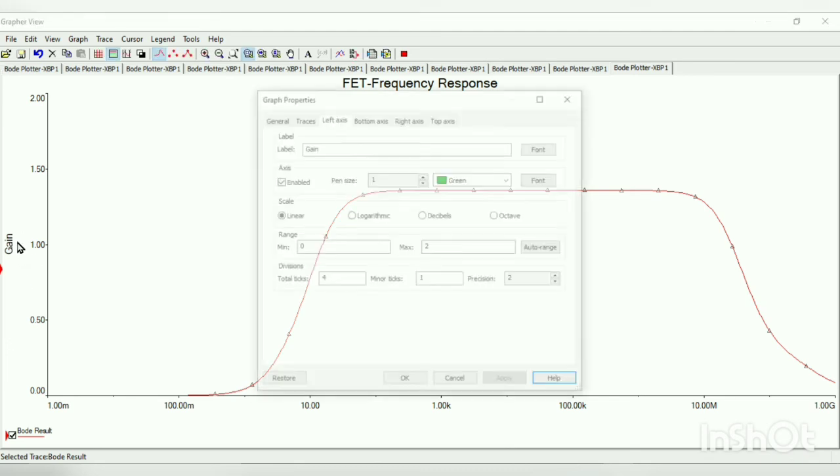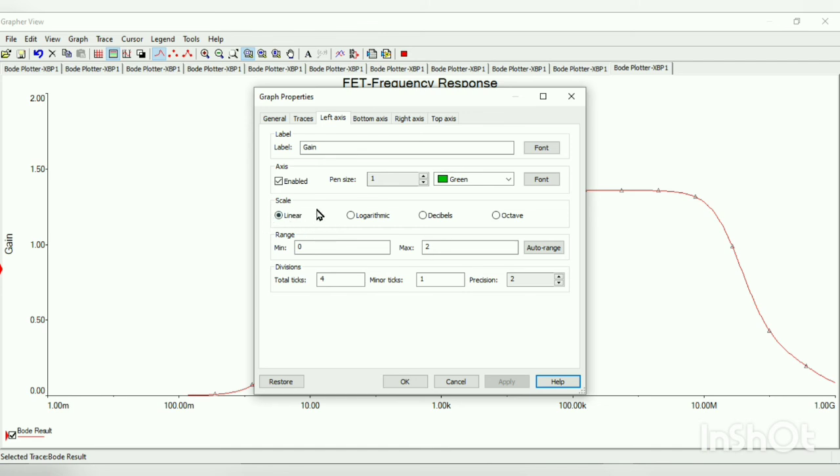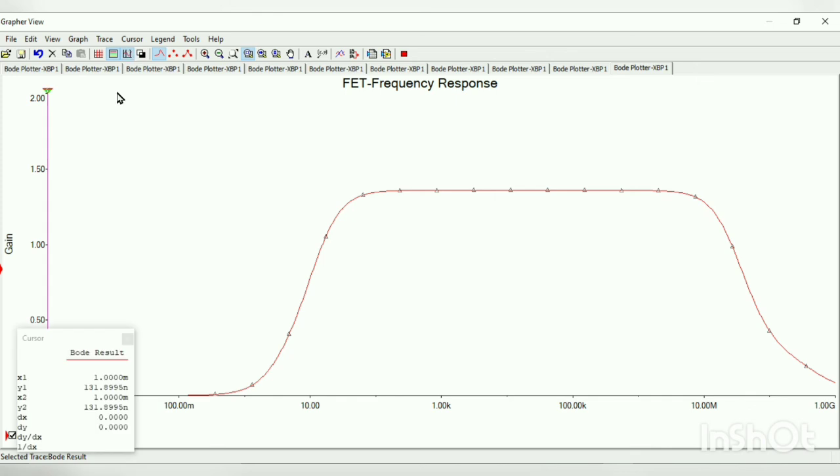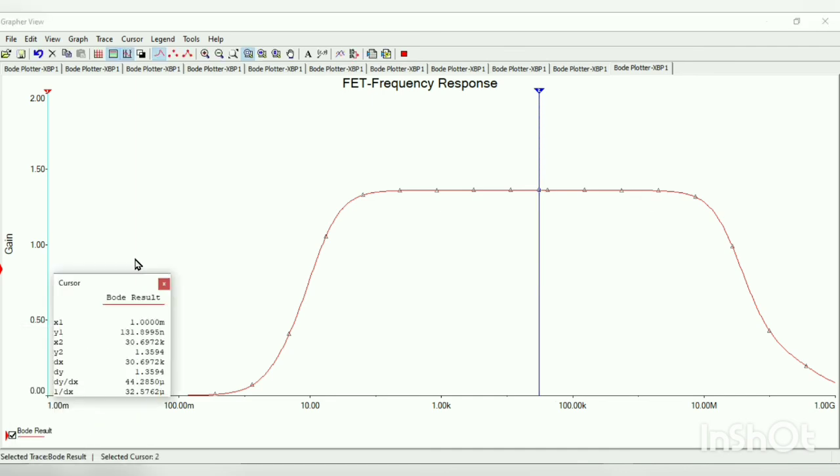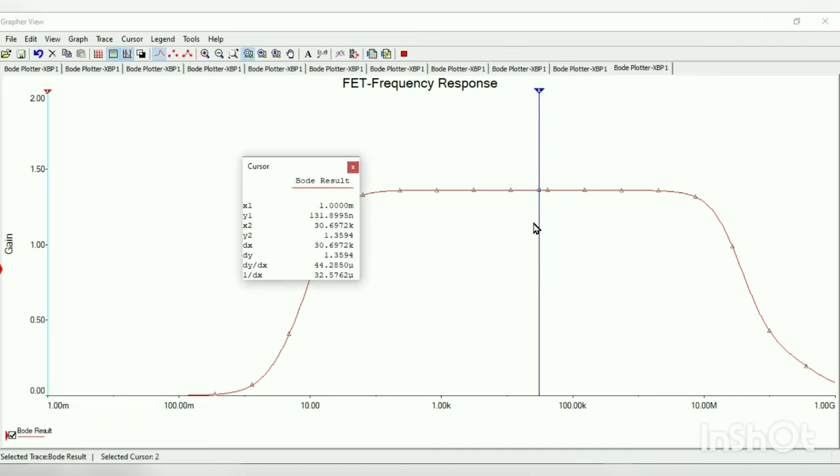If you see the gain scale, it is in linear mode. Before, in BJT, we have seen in decibels. Now we will see the linear mode calculation. First, for our bandwidth calculation, we need our mid-band gain. Moving the cursor to the mid region, we can find our mid-band gain is 1.3594.